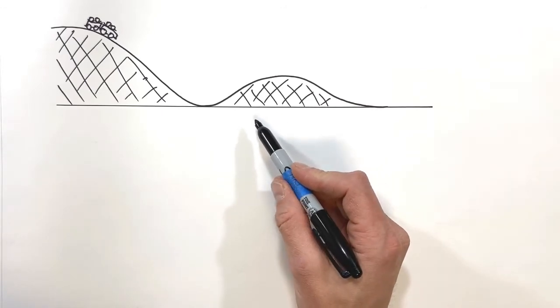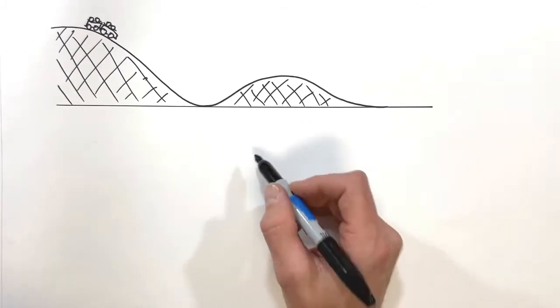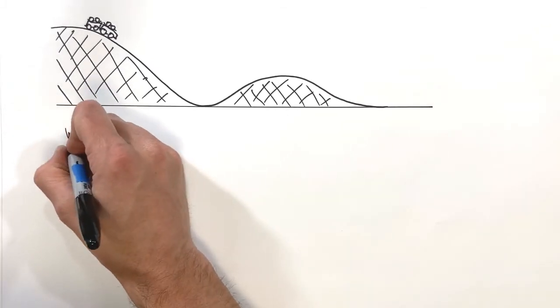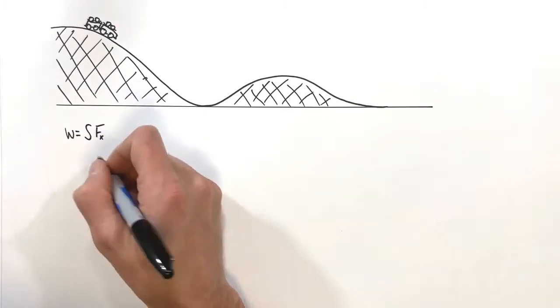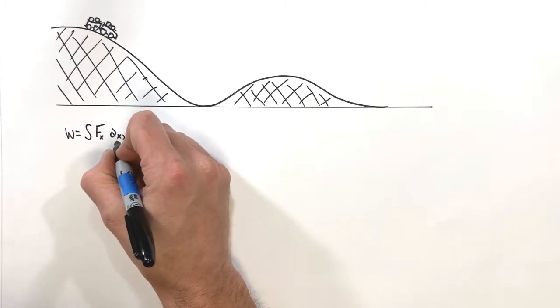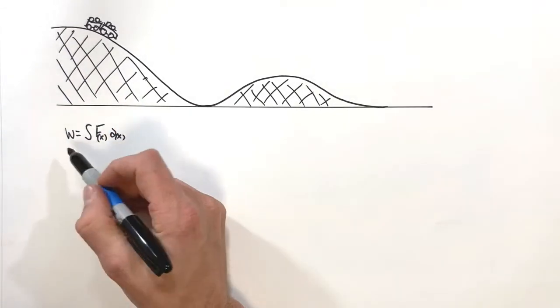To understand a potential energy function, how it works, and how it ties back to what we've already done, I want to take a quick look at work itself. Remember, work is given by the infinite sum of f of x dx, or this could be in any axis—I'm just choosing the x-axis, and you'll see why in a minute.